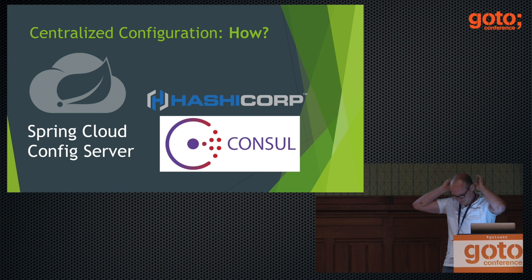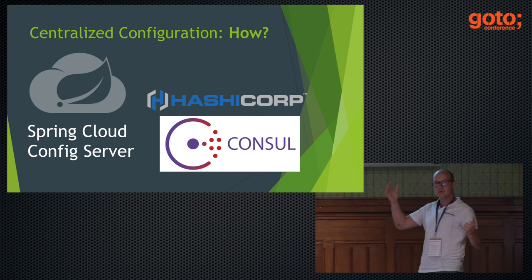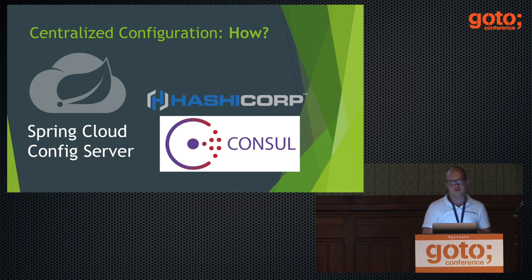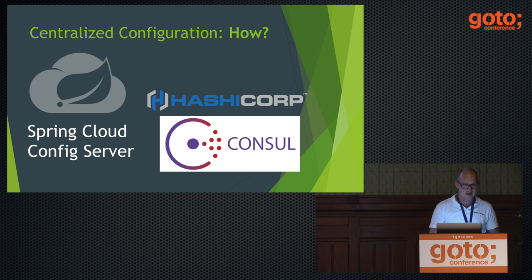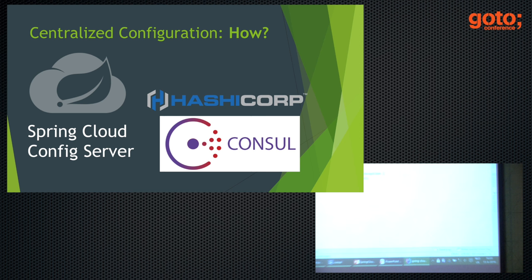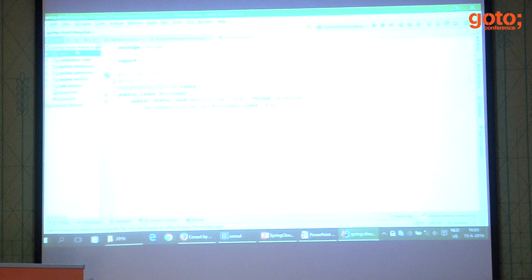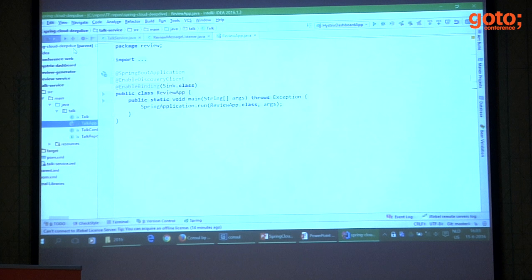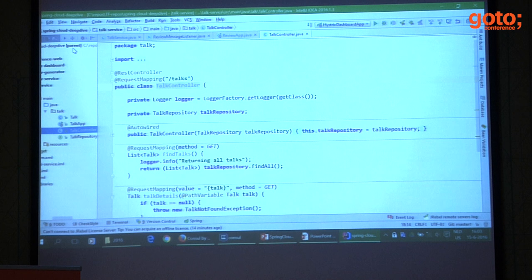That's the server side of things — where we can put our configuration. Now how do we actually access this from an application? I have some code set up here: a service that will expose conference talks, because we're in a conference and we have internal applications that do these sorts of things. It's a simple Spring Boot application that shows a number of talks from this particular track, exposed as RESTful resources — there's a simple controller for that.